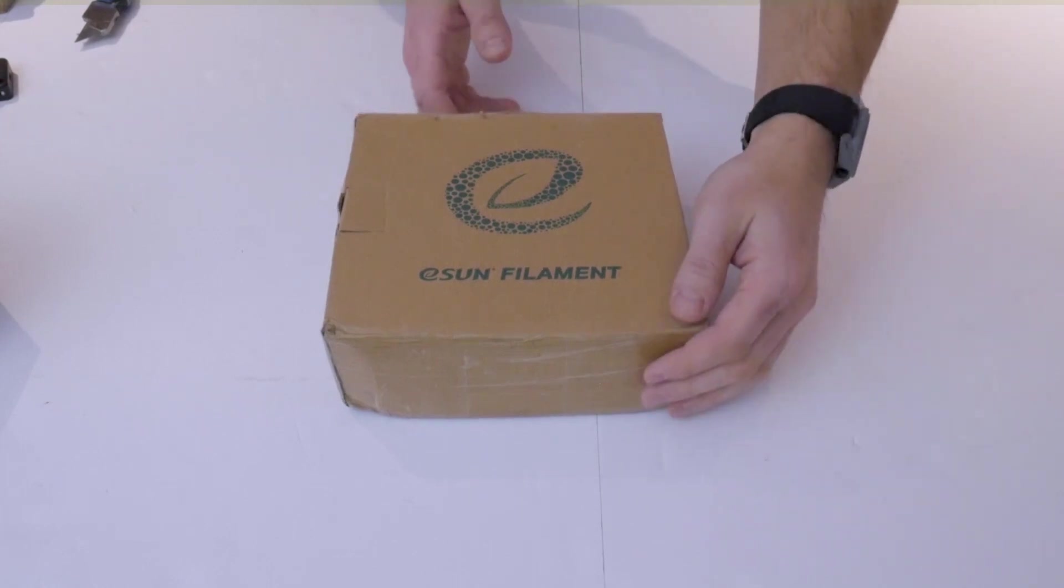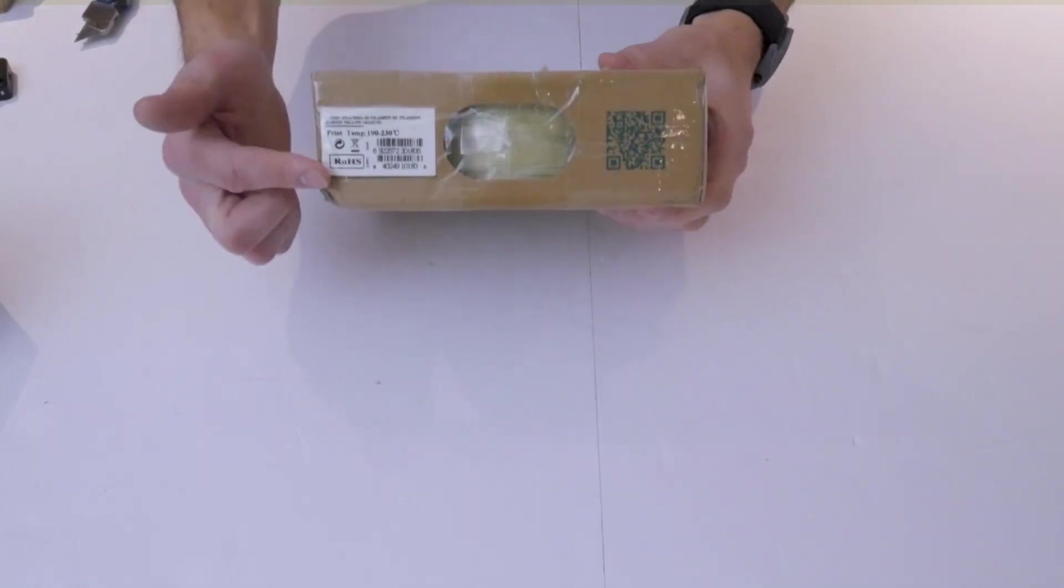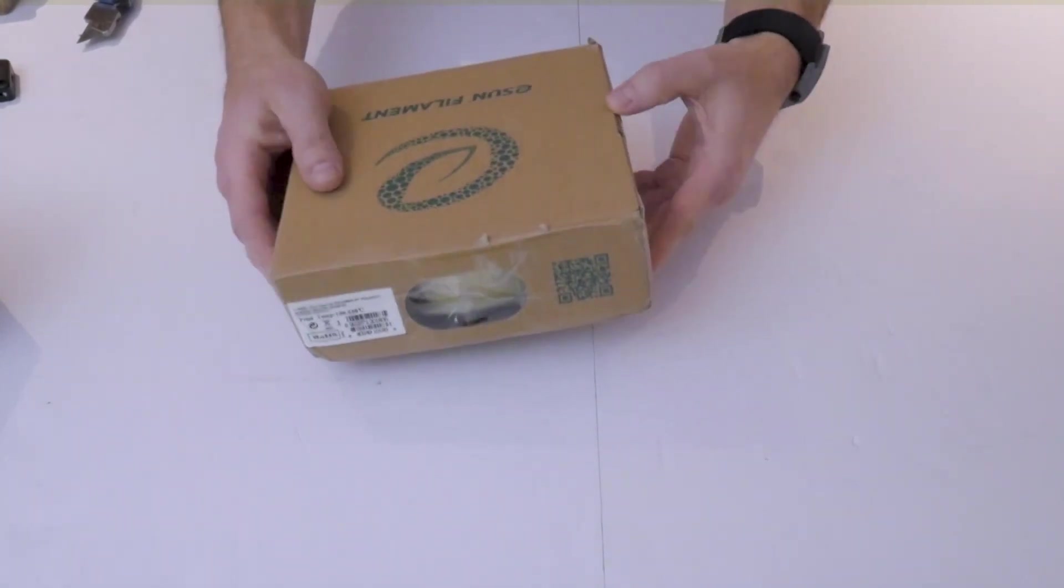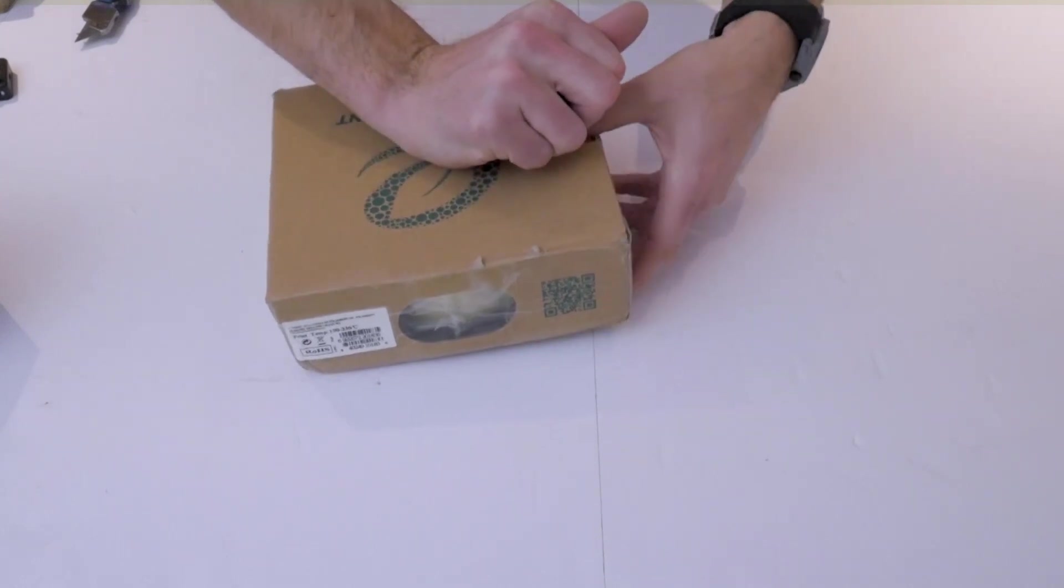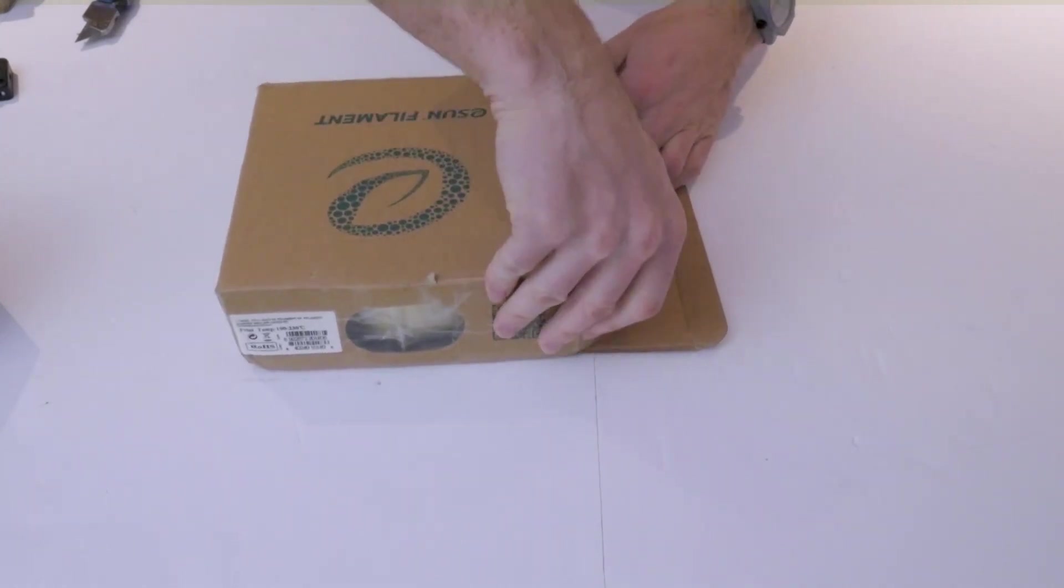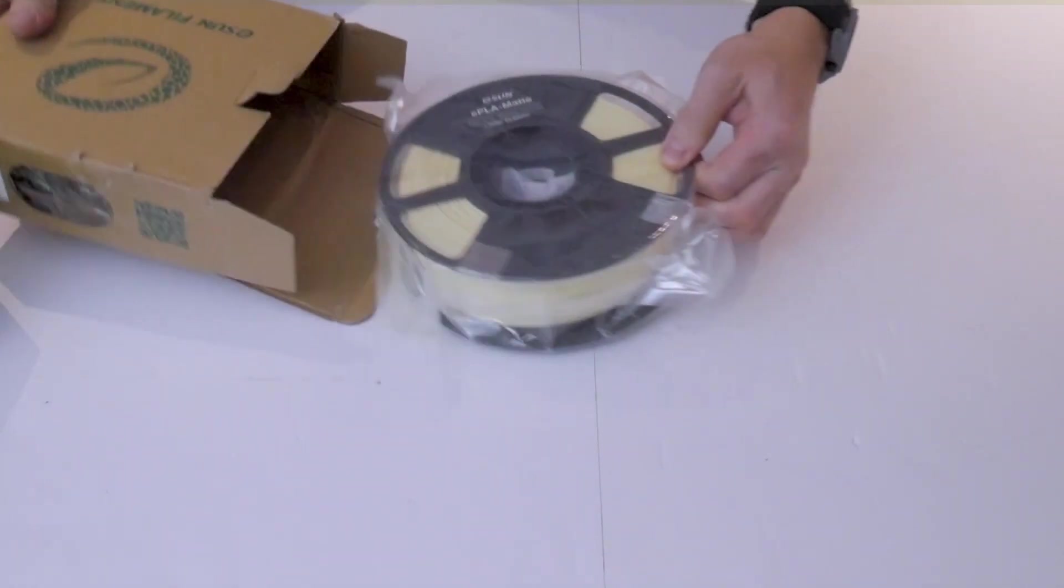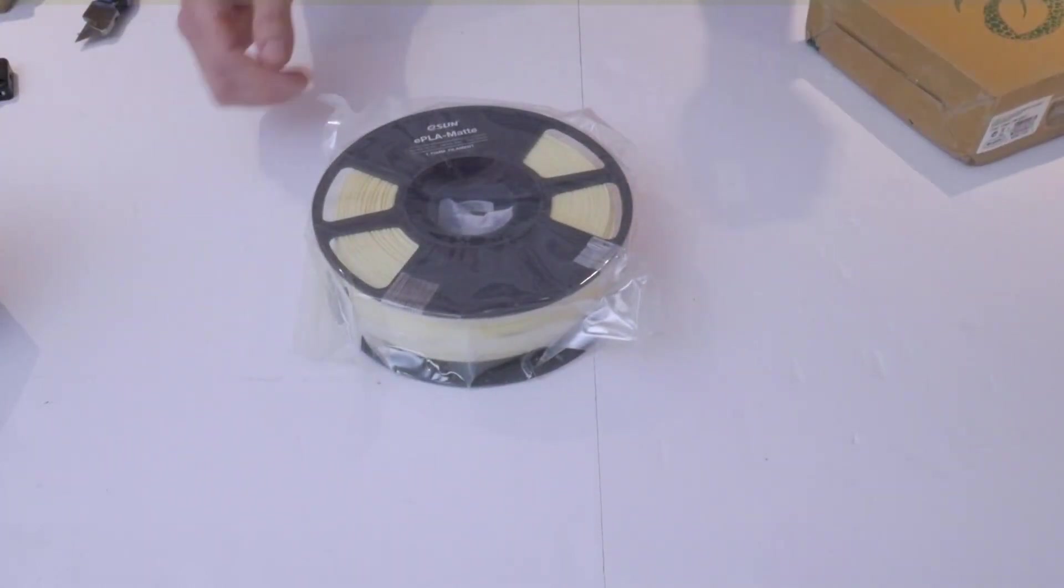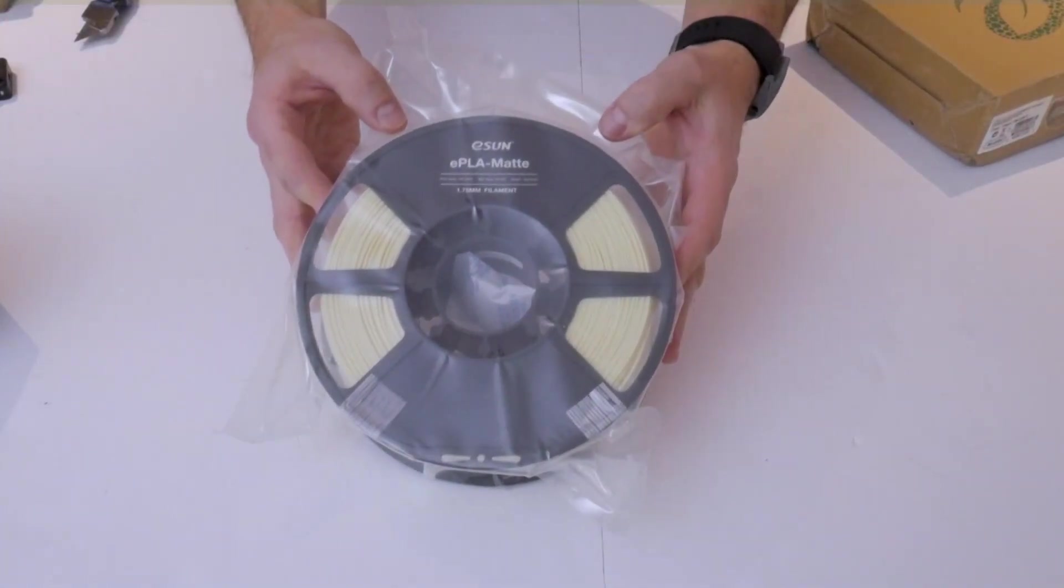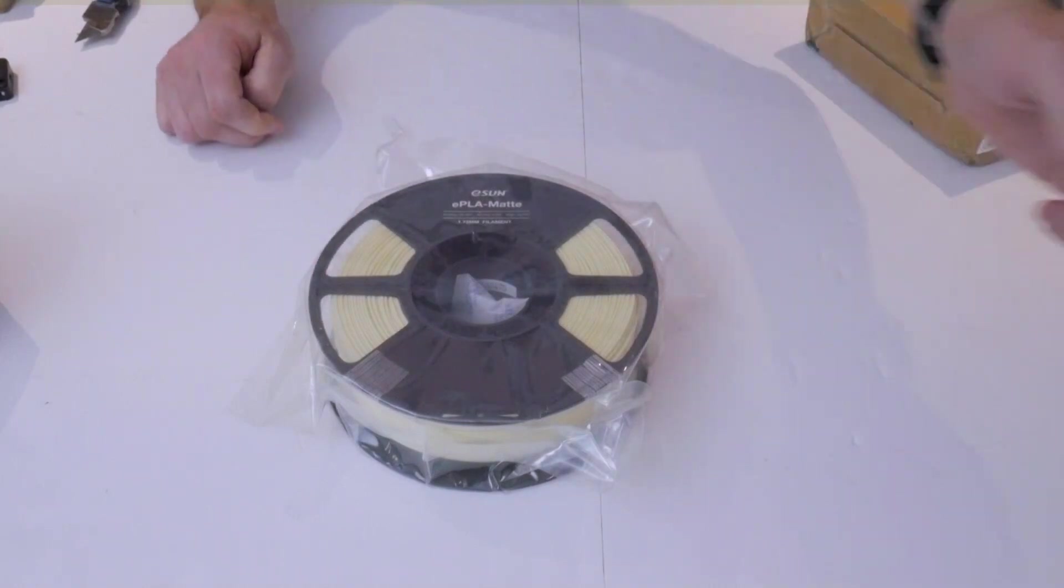The very first thing we're going to do is take a look at the packaging. It's got the little window there with the color visible, so that's great for storage. It's got a label showing what type of filament, what color, and some general printing temperatures. Inside, no surprises - your filament on a pretty standard spool.